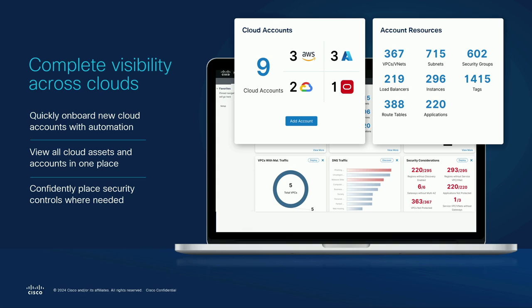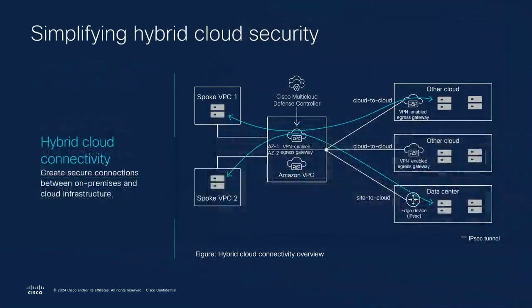By onboarding Multi-Cloud Defense into your accounts, you're able to visualize all your assets in one place — a topology view that lets you very quickly see what you have deployed, where it is, what it communicates with, and how it works. On the hybrid cloud connectivity piece, if you have existing Cisco firewalls in your on-prem environment, you can use multi-cloud defense to establish cloud-to-cloud connectivity through the gateway or by connecting to your on-prem environments through ASAs or FTDs.